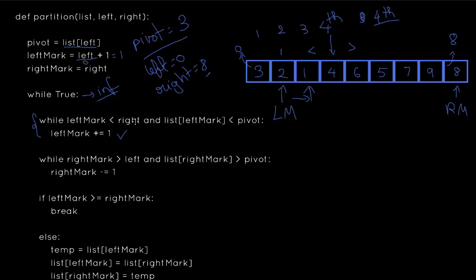We check again: is left mark less than right? Yes. Is list of left mark less than the pivot? The value at index 3 is 4. Is 4 less than 3? No, it's not — 4 is greater than the pivot. So we do nothing and break out of the left mark loop.